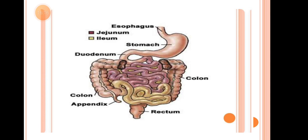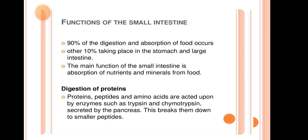In the structure you can see: esophagus, then stomach, and from the stomach — duodenum, jejunum, and ileum. The function of the small intestine: 90% of digestion and absorption occurs here; the other 10% takes place in the stomach and large intestine. The main function is absorption of nutrients and minerals from food.